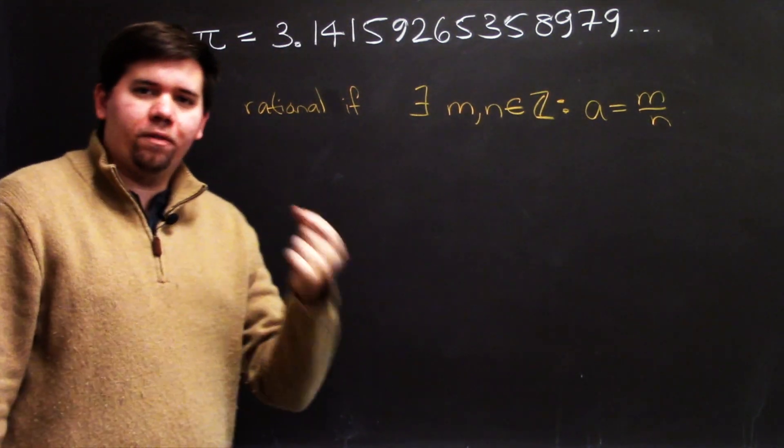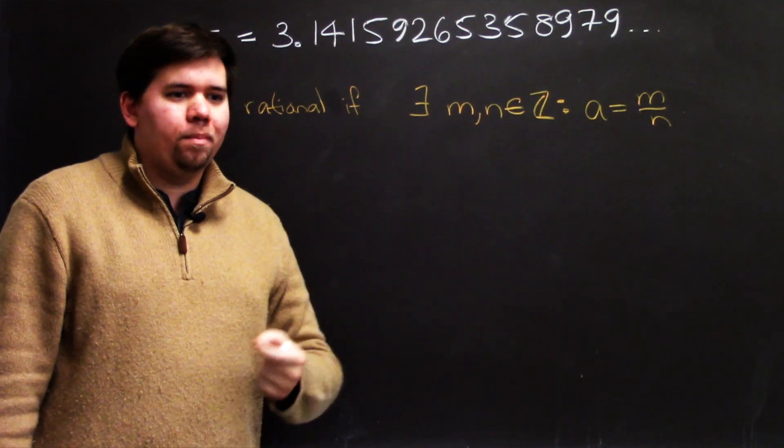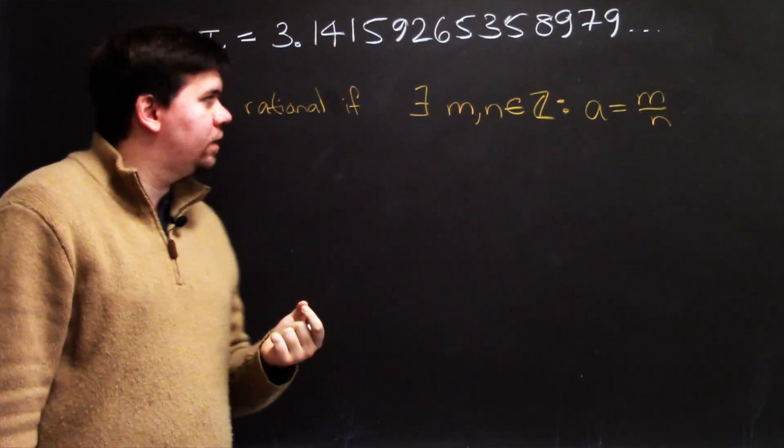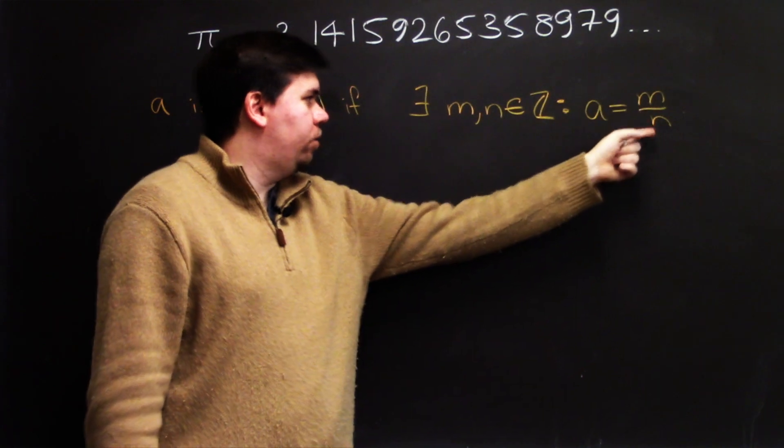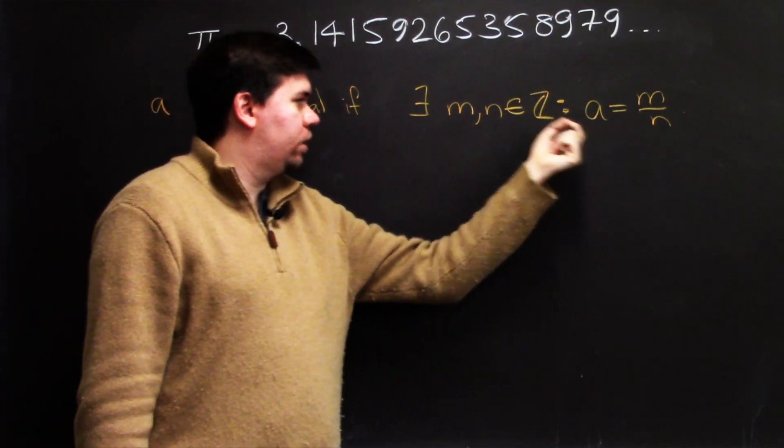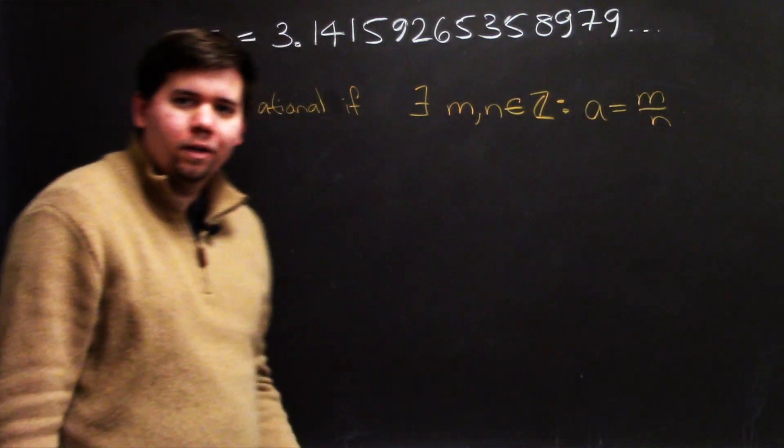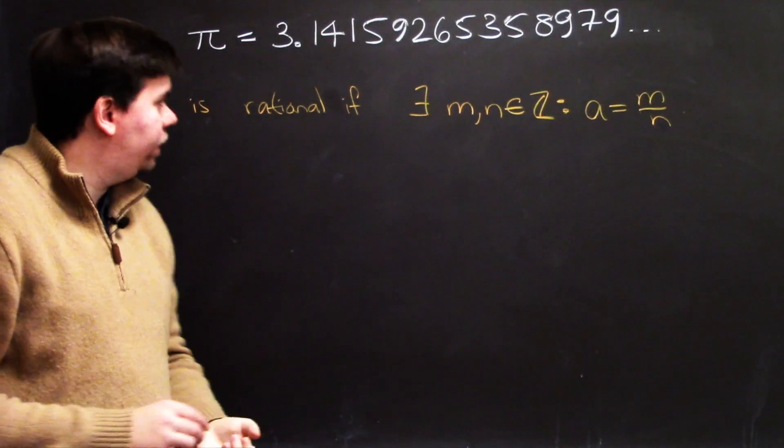For example, 2.5 is a rational number, because 2.5 can be written as 5 divided by 2. There are integers 5 and 2, so that 2.5 is 5 divided by 2. Okay, very good.